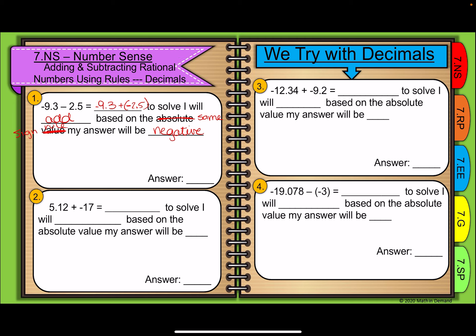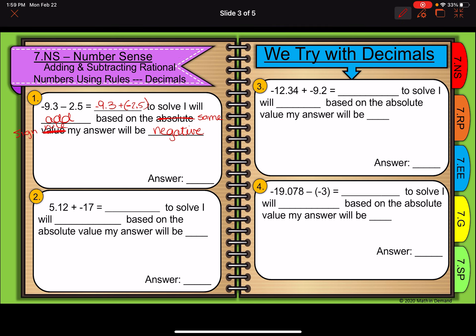If the signs are the same, I add and keep, and I don't have to worry about absolute value. Take your time and slow it down. Change subtraction to addition of the opposite. Now I have 9 and 3 tenths — ignoring those negative signs — plus 2 and 5 tenths. Reminder: we have to line up those decimals so our place values line up. I can bring that decimal straight down. 5 plus 3 is 8, 9 plus 2 is 11. So my answer is negative 11 and 8 tenths.